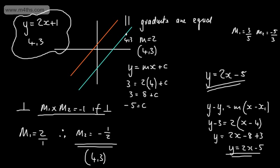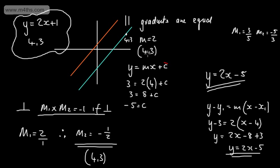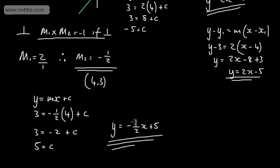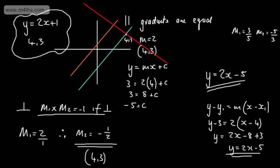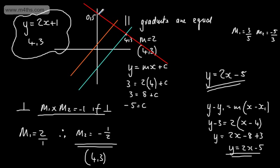Looking at the graph: the point (4, 3) lies on the perpendicular line, and since it is perpendicular, we are at right angles. The line has a gradient of minus 1 half and cuts the y-axis at (0, 5). The original parallel lines had y-intercepts at (0, 1) and (0, -5), and we can see the right angle marked at the point of intersection.